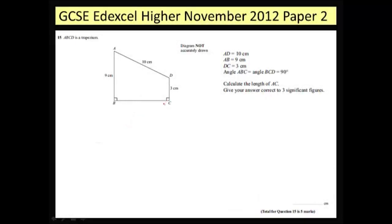Question 15. This is a Pythagoras question and I can tell that because it's got a couple of right angles inscribed here and there's no detail on any of the other angles that aren't 90 degrees. So let's have a look at how I'm going to do this one.